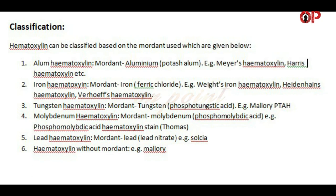Classification. Hematoxylin can be classified based on the mordant used, as given below. 1. Alum hematoxylin — mordant: aluminium potash alum. Examples: Mayer's hematoxylin, Harris hematoxylin, etc. 2. Iron hematoxylin — mordant: iron, ferric chloride. Examples: Weigert's iron hematoxylin, Heidenhain's hematoxylin, Verhoeff's hematoxylin. 3. Tungsten hematoxylin — mordant: tungsten, phosphotungstic acid. Example: Mallory PTAH. 4. Molybdenum hematoxylin — mordant: molybdenum, phosphomolybdic acid. Example: Phosphomolybdic acid hematoxylin stain.